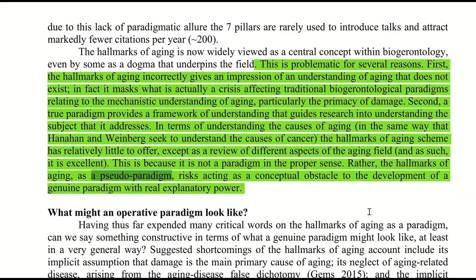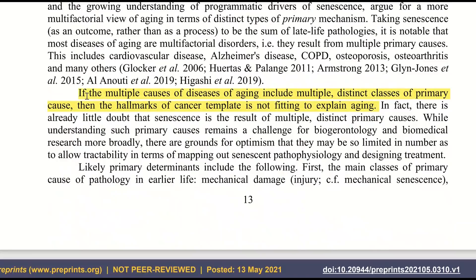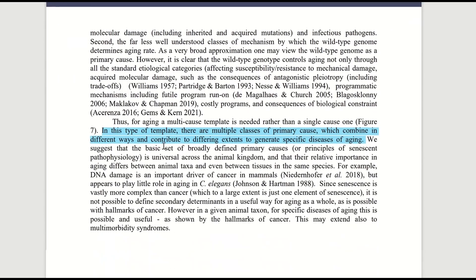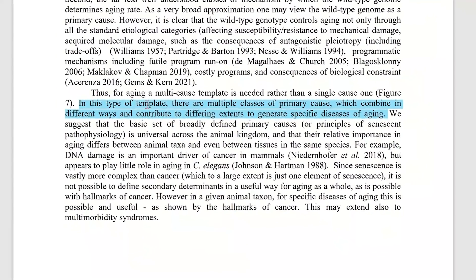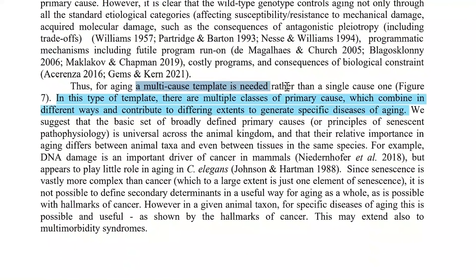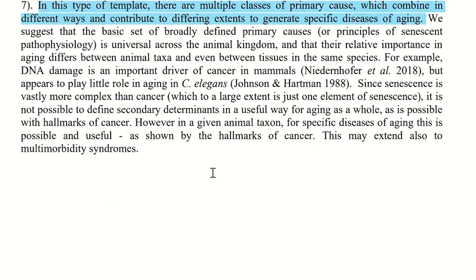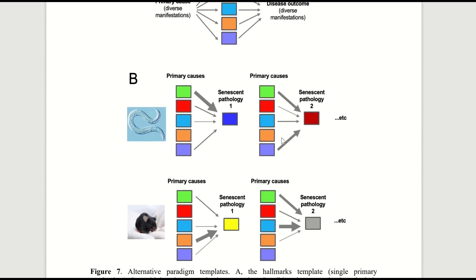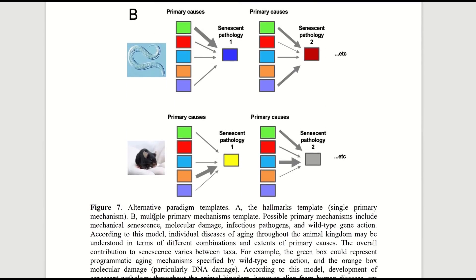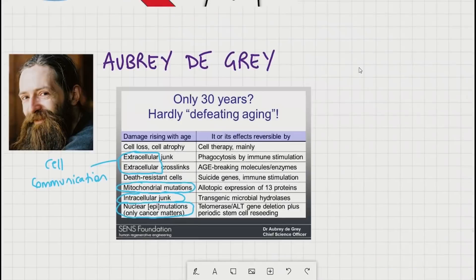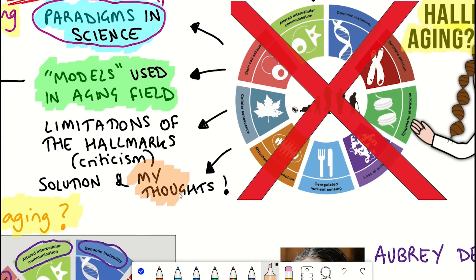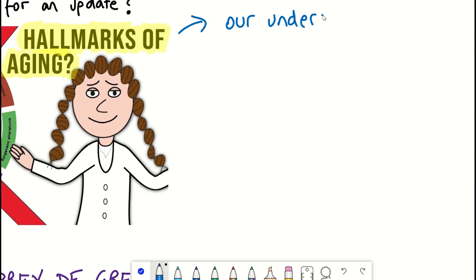So what would be their solution? They argue for a more multifactorial view of aging in terms of the distinct types of primary mechanisms. To account for multiple types of primary mechanisms — as opposed to the cancer hallmarks where you have one main primary mechanism — you would need a multi-cause template rather than a single-cause one. You can see their template in this figure. In this type of template, there are multiple classes of primary cause which combine in different ways and contribute to differing extents to generate specific diseases of aging.